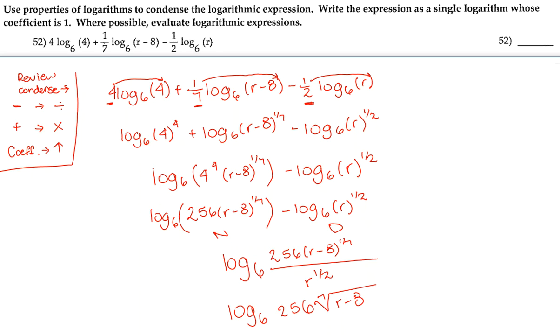The new exponent is 1, but because it is 1, we don't need to write it. And then in the denominator, r to the 1/2 will turn into the square root of r. Remember, the square root always has the root of 2, but we don't always write it here.